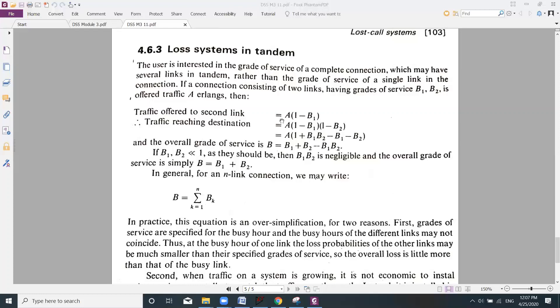In the system, how much traffic comes to the second link is given by A into 1 minus B1. Traffic reaching the destination is given by A into 1 minus B1 multiplied by 1 minus B2. Now let us solve this bracket.